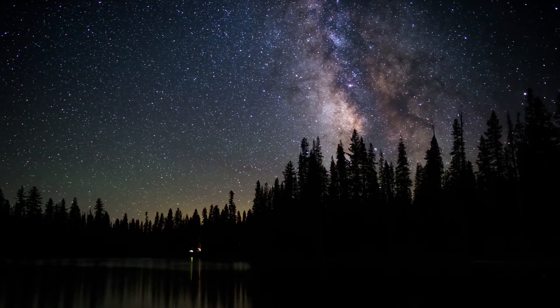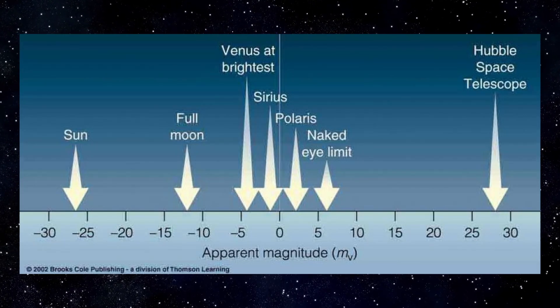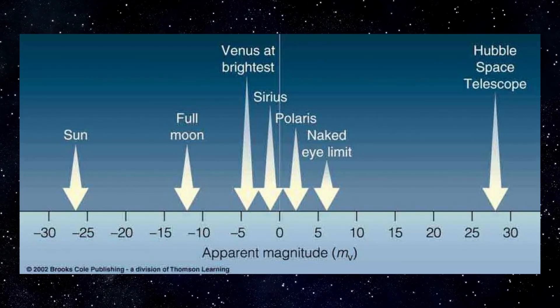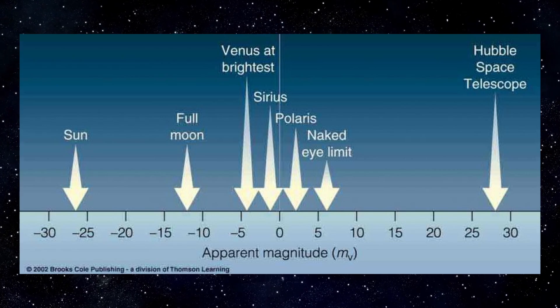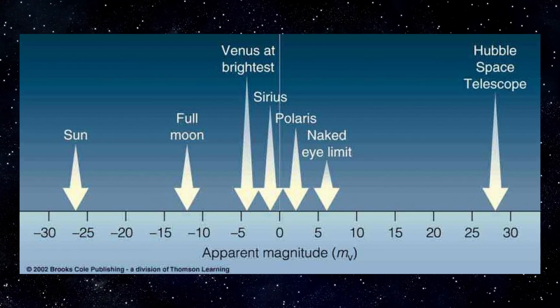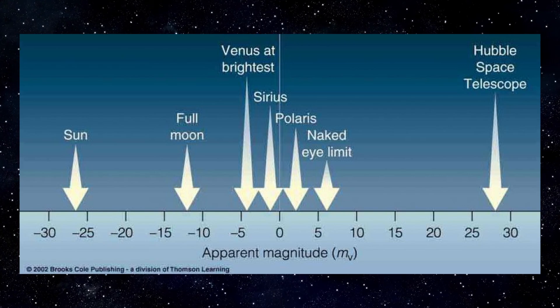The bigger the magnitude number, the fainter the star. The faintest stars that we can see with the naked eyes under a dark sky are about magnitude 6. If an object is really bright, it is assigned a negative magnitude.